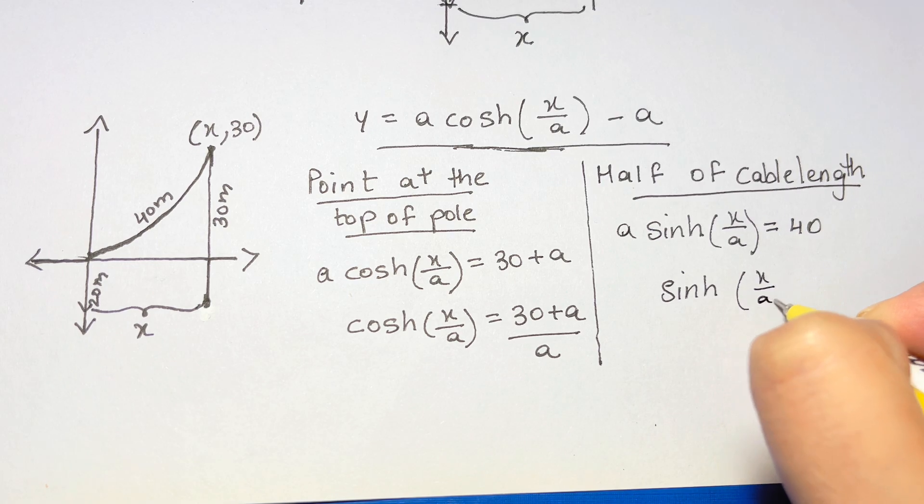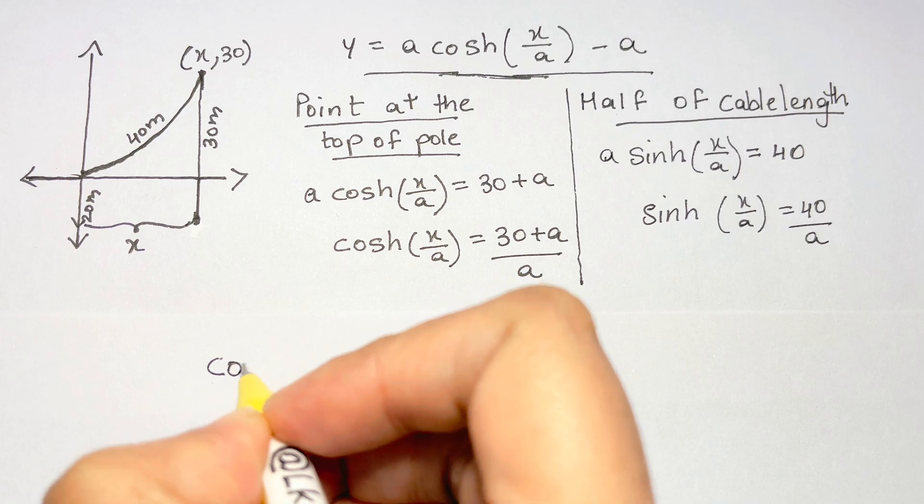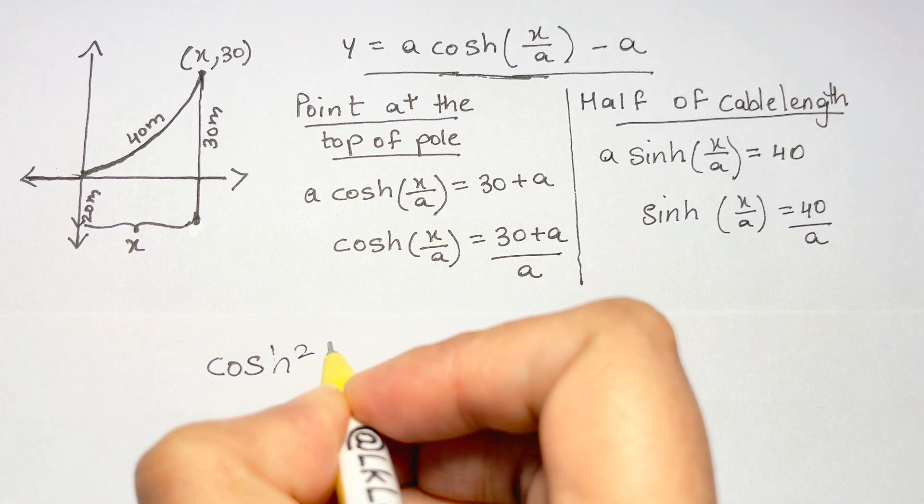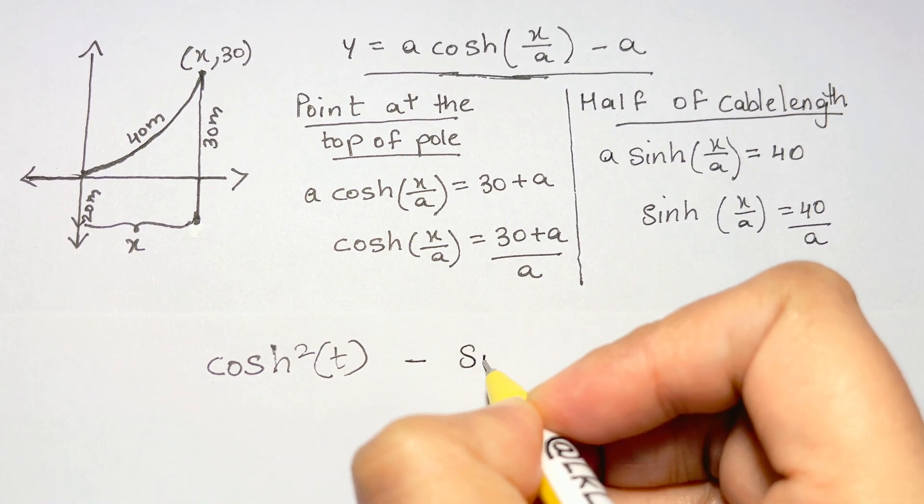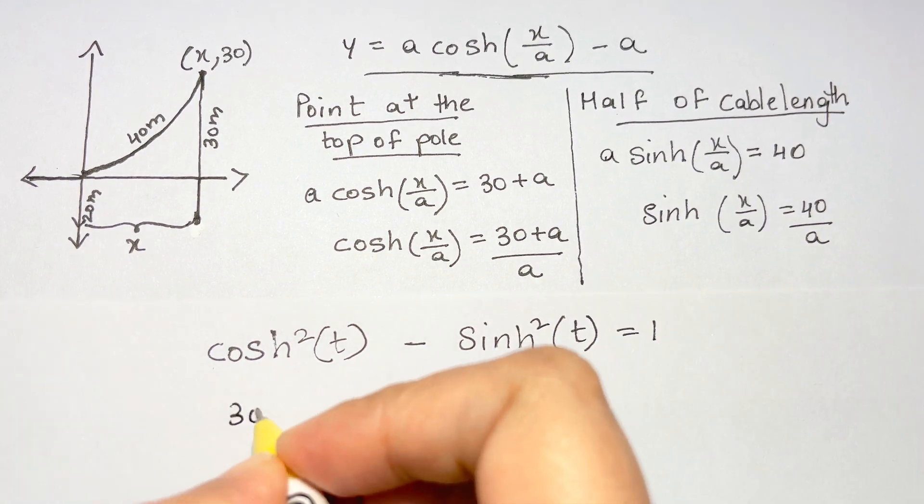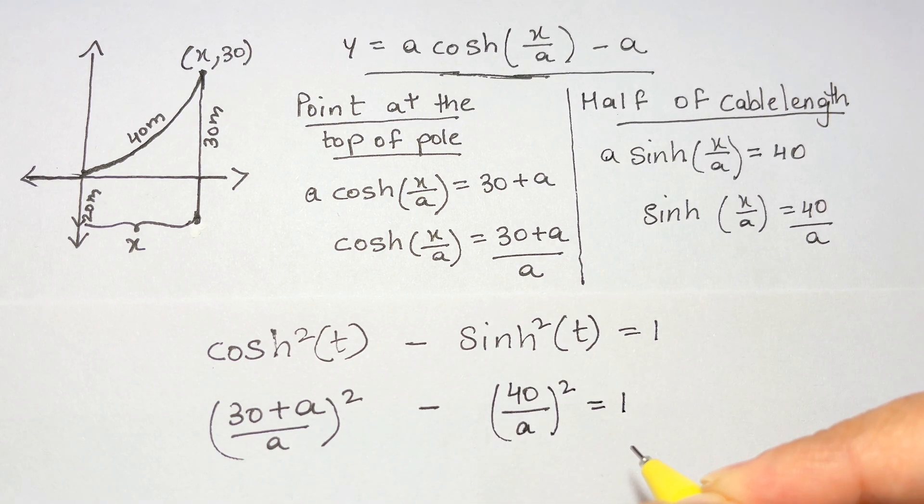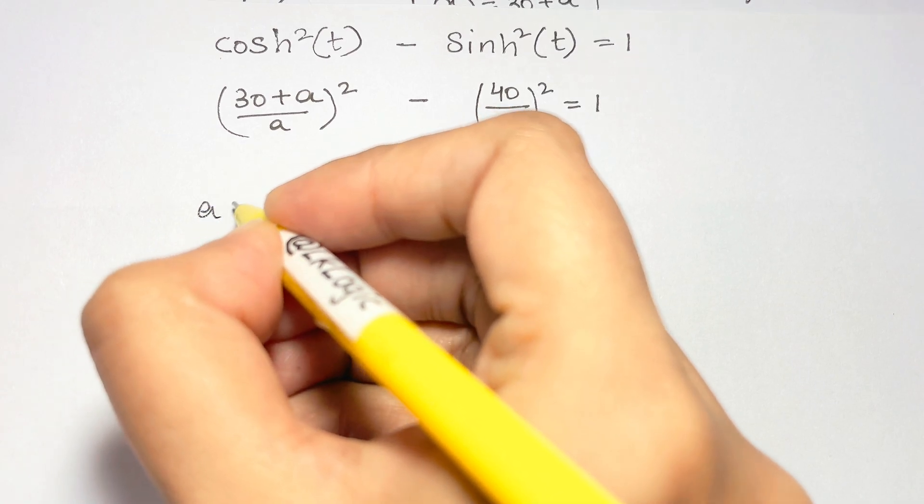Now we can use the hyperbolic identity that the cosh squared of t minus the sinh squared of t is equal to 1. So we substitute in the values we have just arrived, and we can solve for this value of a as a quadratic equation. We get that a is equal to 35 over 3.